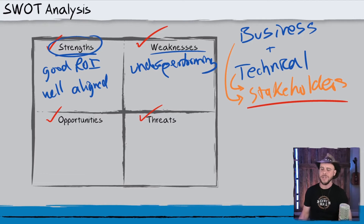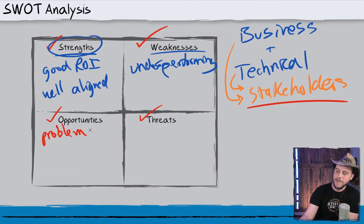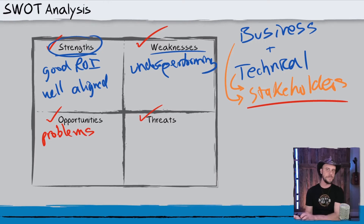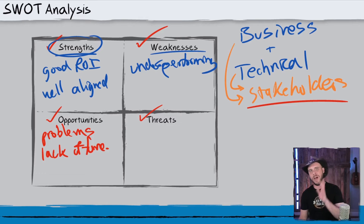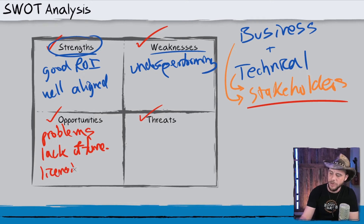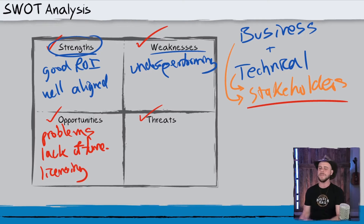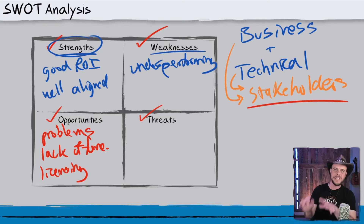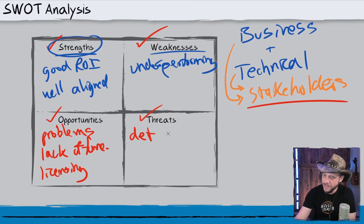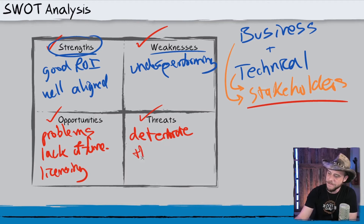When we get to Opportunities, these might be flat-out problems — things where it's not about performance level, but could be lack of functionality, inability to support a particular language, or perhaps a licensing problem with a particular vendor. These are glaring problems. Moving through the chart: strengths we want to keep, weaknesses we want to identify, opportunities we want to fix, and when we look at threats, we recognize these are things that if we don't take any action, they will deteriorate the value of what we have.